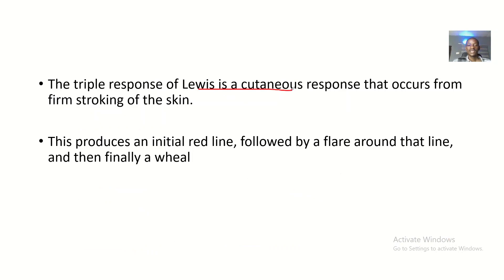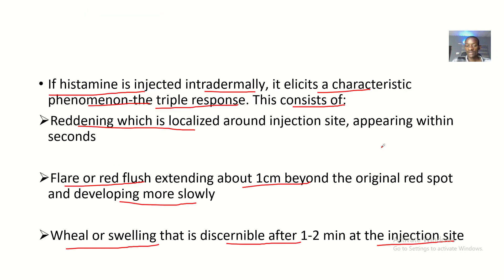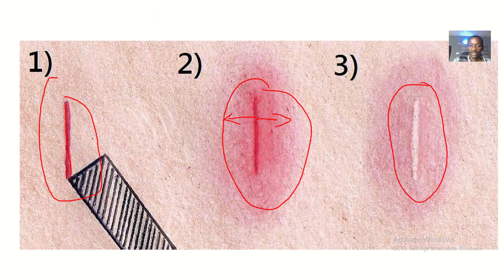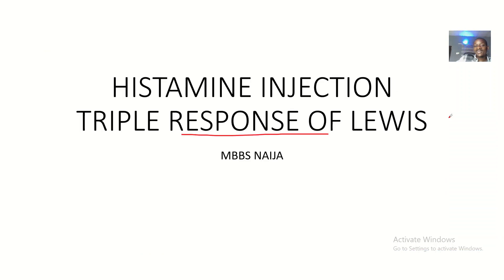The triple response of Lewis is a cutaneous vascular response. In this aspect, we're talking about histamine intradermal injection. It produces an initial red line followed by a flare or red flush around that line, and then finally a wheal. The red flush reduces and you see a white line there. This is basically how histamine injection can cause a triple response of Lewis.